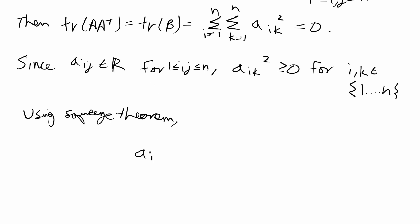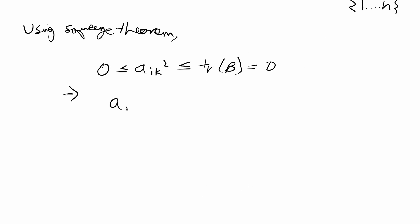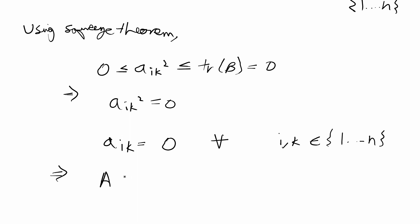Using the squeeze theorem: any A_ik squared is greater than or equal to zero. Since the double sum of all A_ik squared equals zero and each term is non-negative, any single A_ik squared must be less than or equal to the trace of B, which equals zero. Thus A_ik squared equals zero, and taking the square root gives A_ik equals zero for any i, k between 1 and n. Therefore A must be the zero matrix, because every entry of A equals zero.